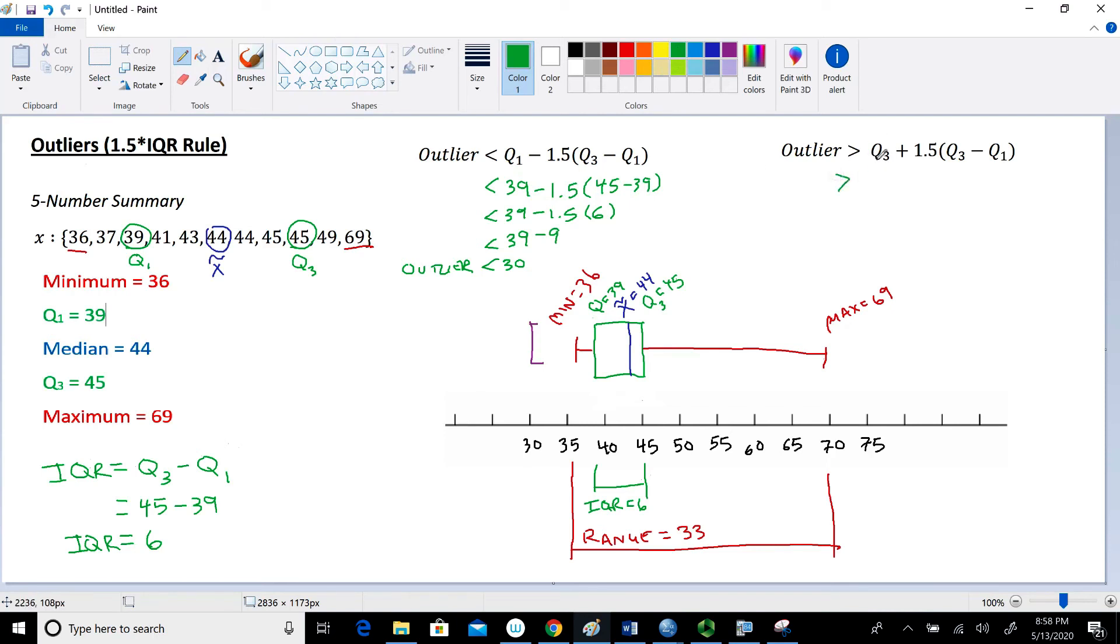So in this case, we're referencing Q3. And with Q3, that value is 45. And this time, it's going to change to a plus 1.5 times Q3, which is 45 minus 39. Now, technically, if you think about it, we don't have to do all this work over again. But I'll do it just to be on the safe side.